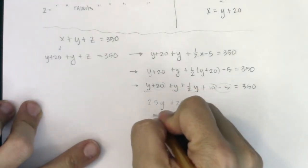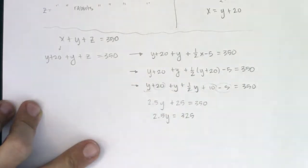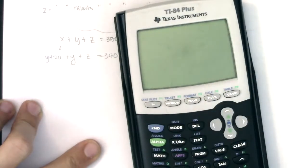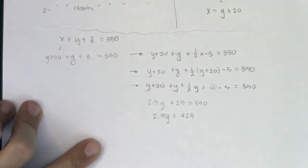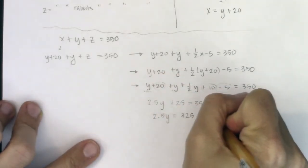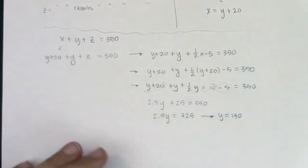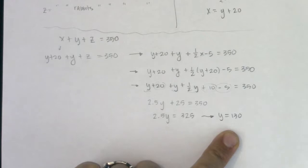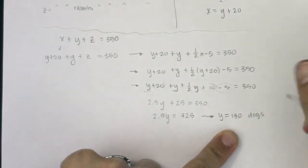When I subtract the 25 over, I'm going to get 2.5y equals 325. Then I'll go to my calculator—we'll take 325 and divide that by 2.5, and it looks like y equals 130. So y equals 130. That's great. That's not my entire answer, that's just the number of dogs. I have 130 dogs at the shelter.